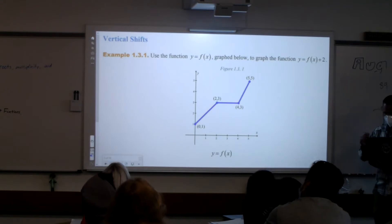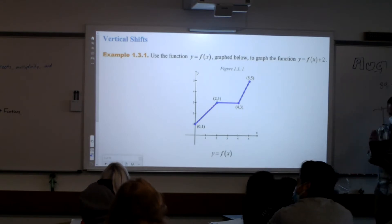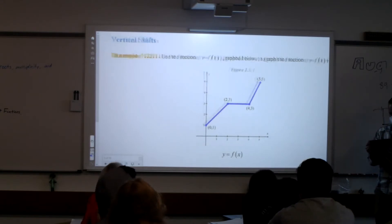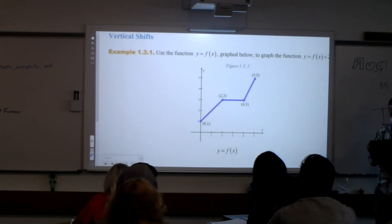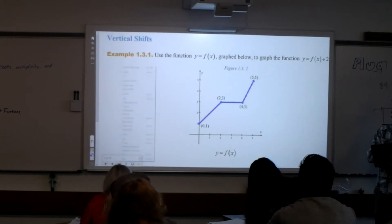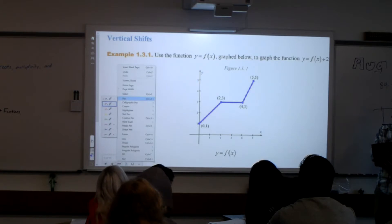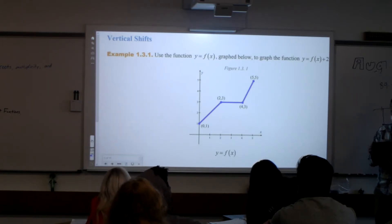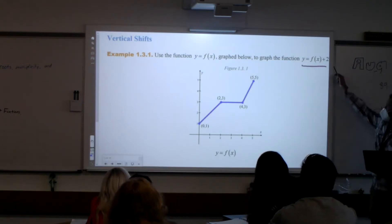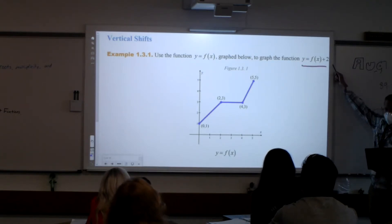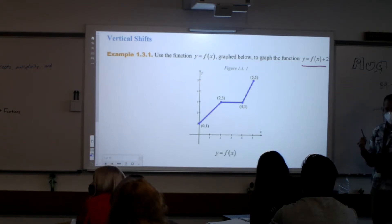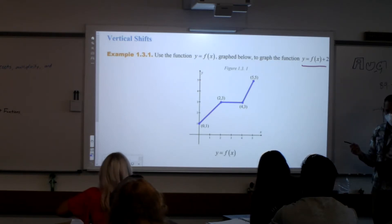Here's our parent function f of x. We are going to change it by adding 2 to it. Andrew, what did you say that would do? You said down 2. Do you guys agree with Andrew? So adding on the end, it does go up or down, right? So Andrew's right there, but instead of going down, just do what it tells you to do, which would be up 2.